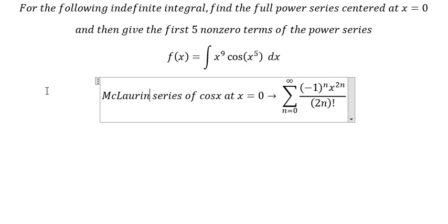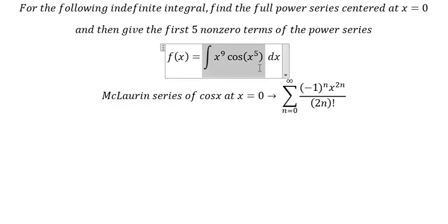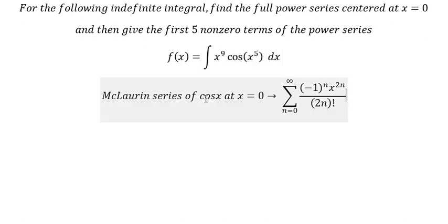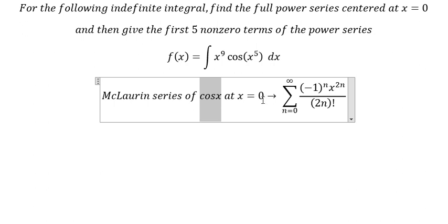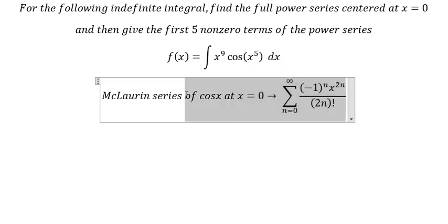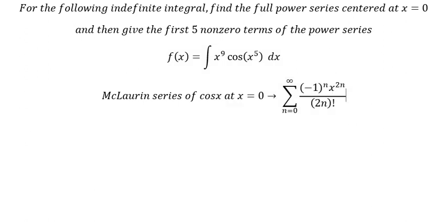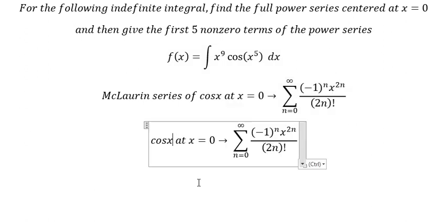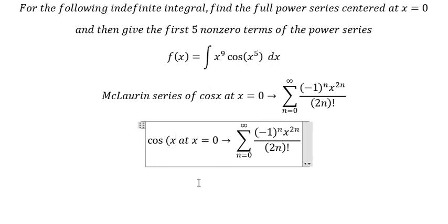Welcome back to my channel. Today I want to talk about Maclaurin series. We know that the series of cosine s at s equal to zero. In this situation we see that this is about s to the power of number five, so we change s into s to the power of number five in here.